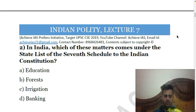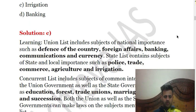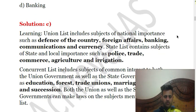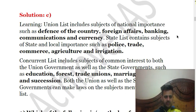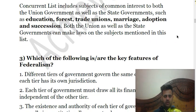The State List contains subjects managed by state governments, and the Concurrent List contains subjects that can be managed by both the Union and state governments. Education comes under the Concurrent List, forests also come under the Concurrent List, and banking comes under the Union List. However, irrigation comes under the State List, along with agriculture. So the answer is C — irrigation. Defense, foreign affairs, banking, communications, and currency fall under the Union List; police, trade, commerce, agriculture, and irrigation fall under the State List; education, forests, trade unions, marriage, adoption, and succession fall under the Concurrent List.